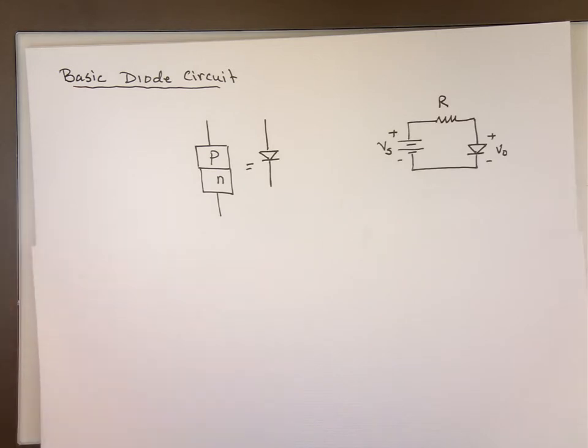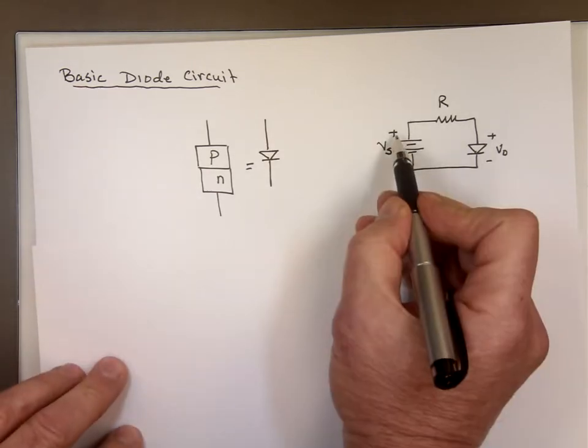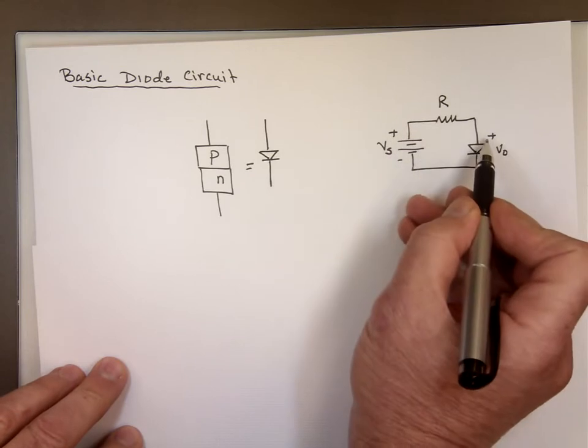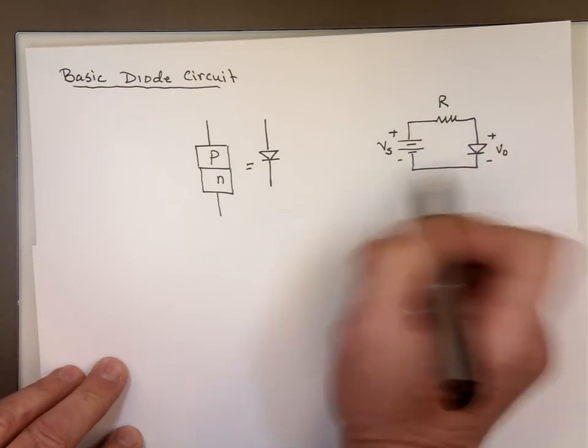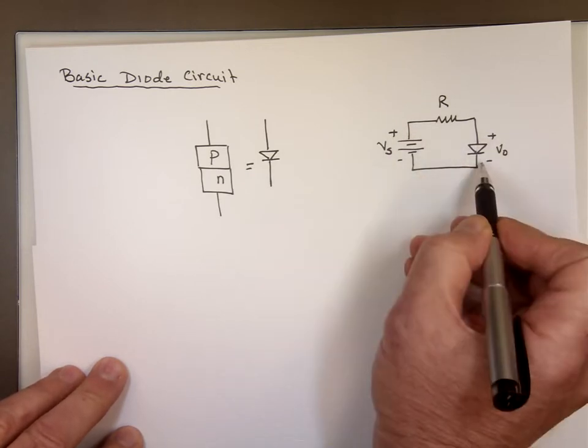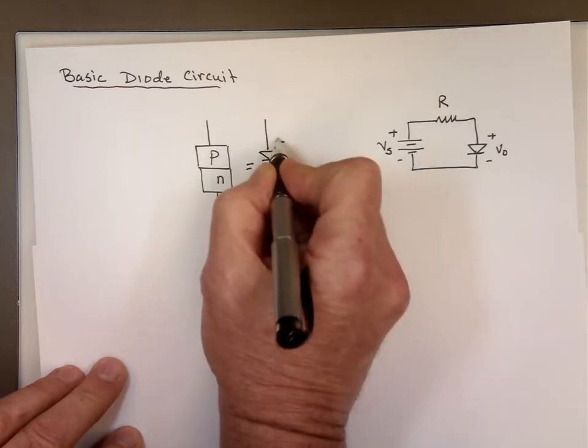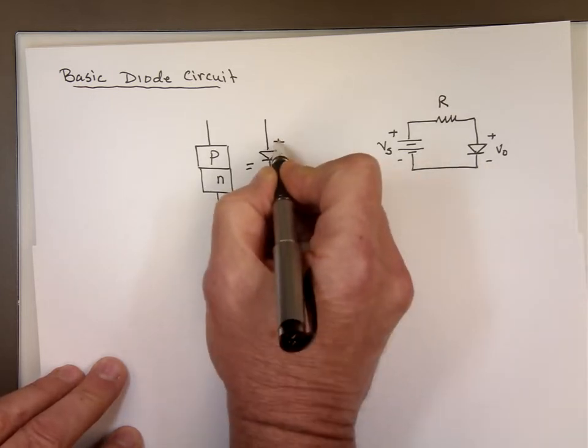Now when you take a circuit like this and connect it, that's known as forward bias. The reason is the plus voltage is attached to the plus end of that diode where the negative is attached to the negative. So this diode is connected in forward mode or forward bias.